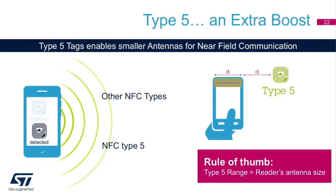The increased range of Type 5 technology allows you to design with a smaller antenna in your tag, reducing cost as less metal is needed to create the antenna. In addition, the ST25DV tag offers an RF internal capacitor value of 99 pF, which requires less inductance and results in even smaller antenna designs.